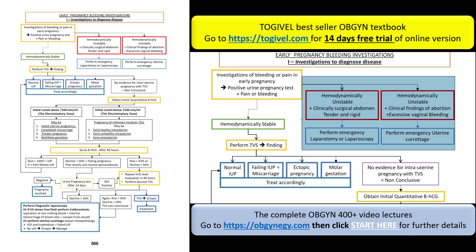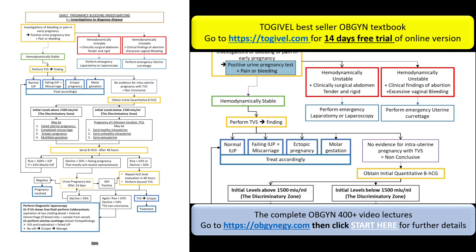The first thing you decide is: is this bleeding intraperitoneal or is this bleeding external vaginal bleeding? If it is intraperitoneal bleeding you have to go for laparotomy or laparoscopy. If it is vaginal bleeding then you have to go for uterine curettage.